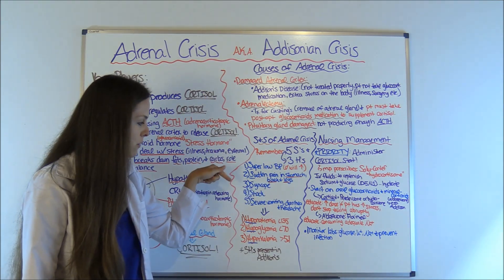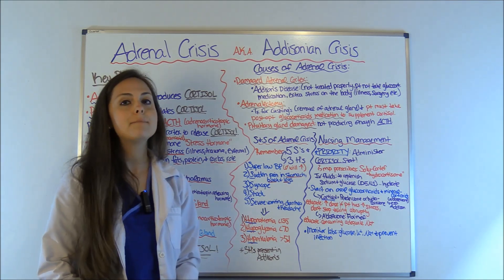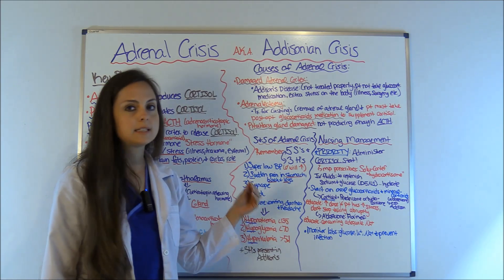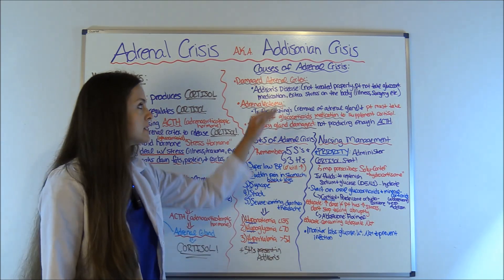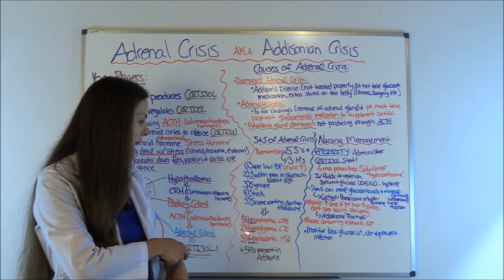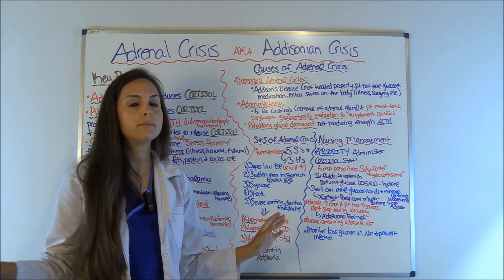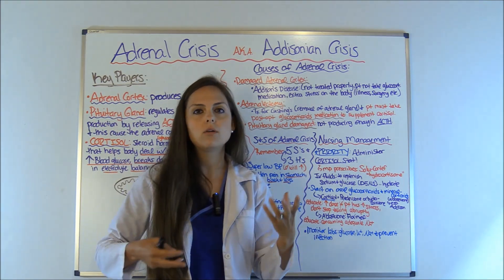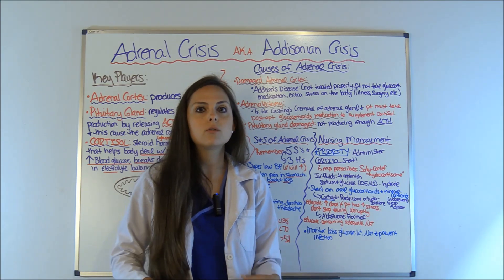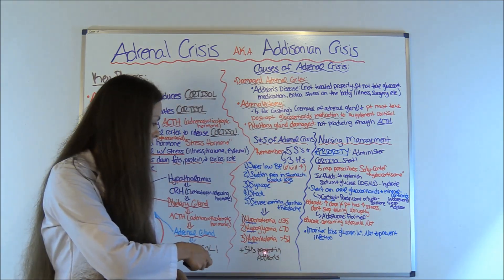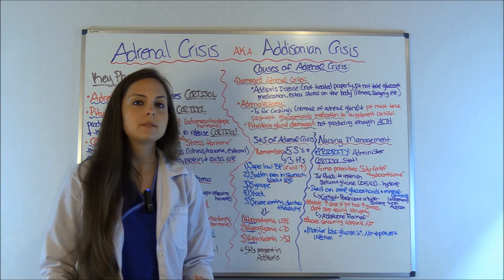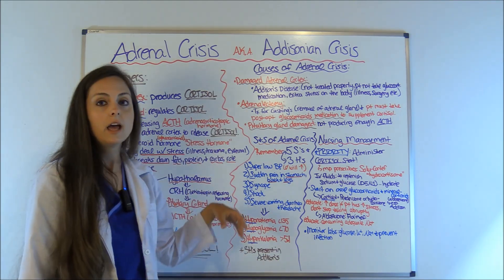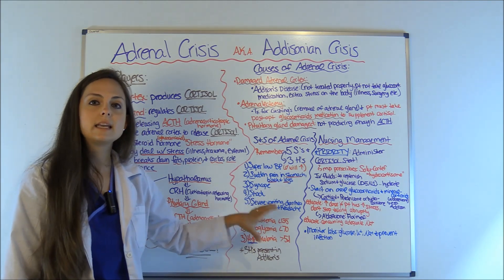Because of those symptoms, this leads into the three H's. First H — hyponatremia: sodium less than 135, from the vomiting, diarrhea, and the role cortisol and aldosterone play with electrolytes. Second H — hypoglycemia: blood sugar less than 70, because cortisol increases blood sugar and helps the body metabolize glucose, so without cortisol the blood sugar plummets. Third H — hyperkalemia: potassium greater than 5.1. Remember these three H's because they are also present in Addison's disease.